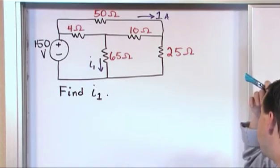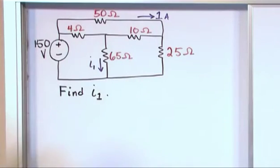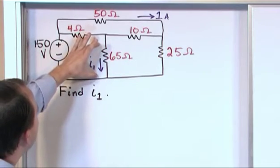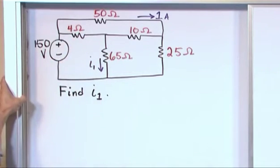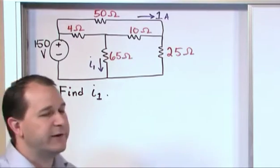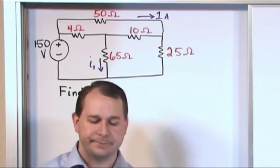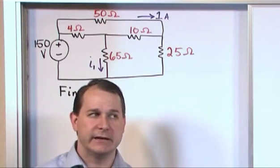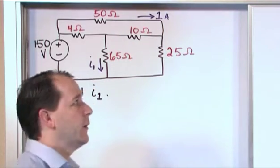My first thought when I looked at this was that I didn't see anything that jumps out as a quick way to solve it, because the current that we want is way down here. So what I thought I should do is start writing Kirchhoff current law and Kirchhoff voltage law equations and try to get a system of equations that would allow me to find the currents in the legs of the circuit.